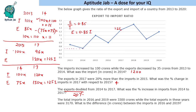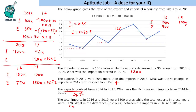Next question: total imports in 2016 and 2019 were 3300 crores, while total exports in these years was 3170 crores. What is the difference between imports in 2016 and 2019? Let import in 2016 be 100x and import in 2019 be 100y. The ratio in 2016 is 0.9, so export in 2016 is 90x. In 2019 the ratio is 1.0, meaning import equals export, so export in 2019 is 100y.